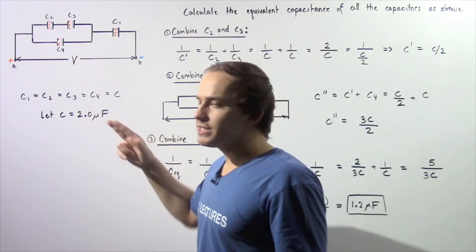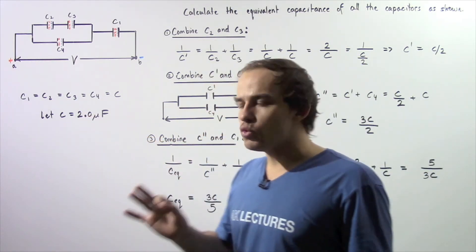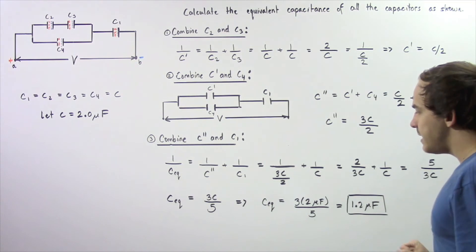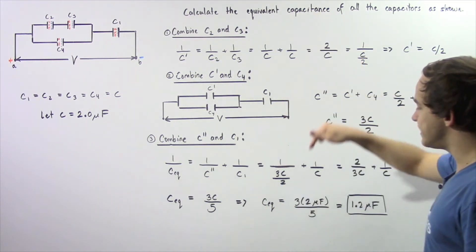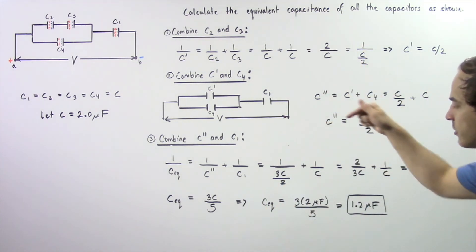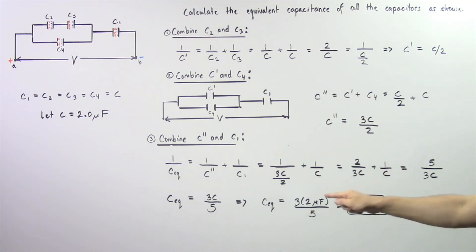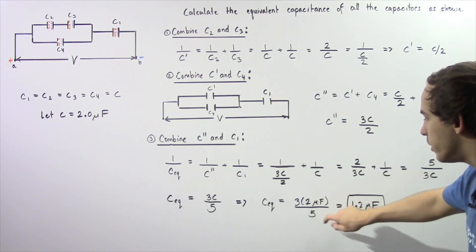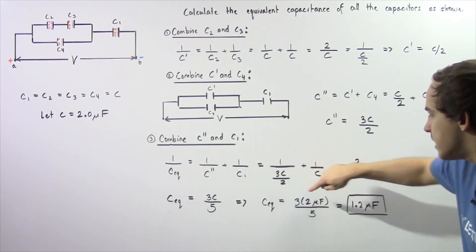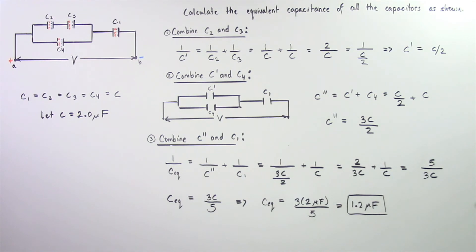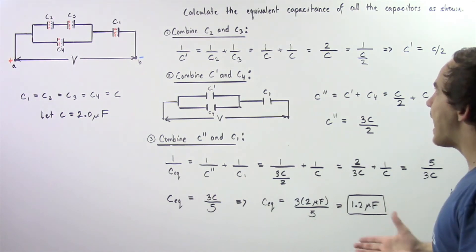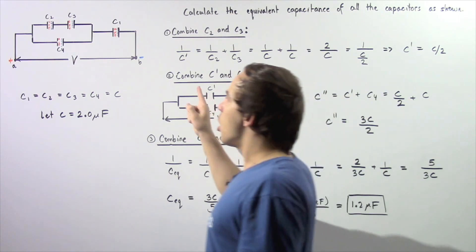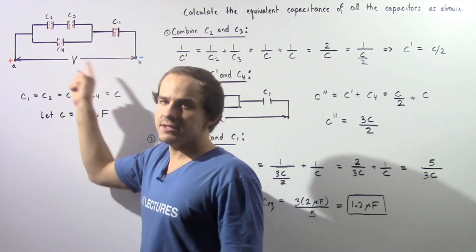Since C equals 2 microfarads, the equivalent capacitance is three times two divided by five, which equals 1.2 microfarads. This is the equivalent capacitance of all the capacitors as shown.